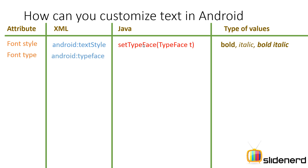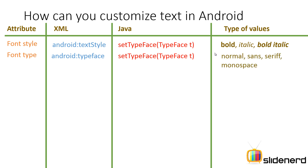Then you have your font type, which is supported in XML using the android:typeface attribute. In Java, the setTypeface method does the same thing. The typeface parameter inside the method is a way to create fonts from your library, SD card, assets folder, or similar sources. We will talk about this in detail in the next video. These are the four fonts that your Android system supports: Normal, Sans, Serif, and Monospace.